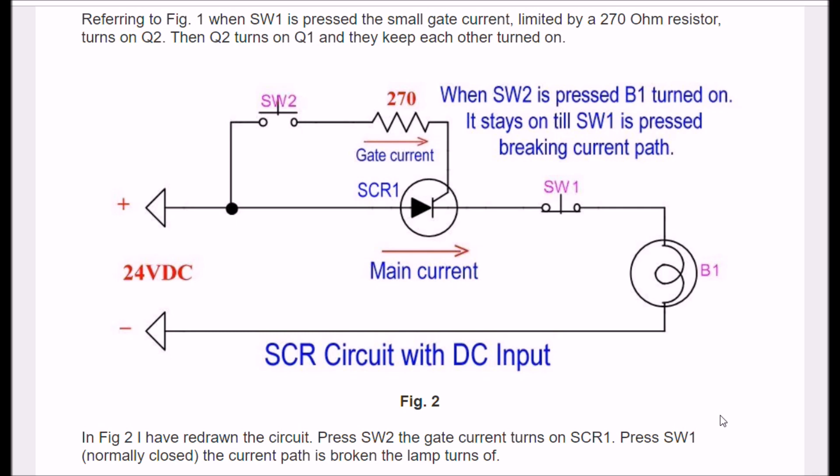Here is an SCR circuit connected to 24 volts DC. It's one of the little bitty ones that you want to test with, and it's wired up as such. So when I press SW2, I get my gate current. The SCR - this is the anode, this is the cathode - always get your gate current from the anode side of the device. I get my main current, light bulb turns on. I release the switch and the light bulb stays on, and it stays on until I press SW1 breaking the current path.